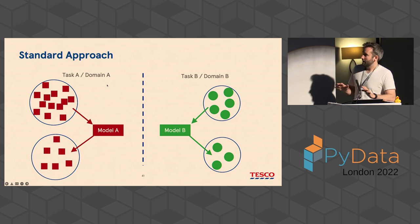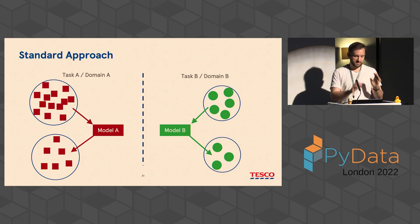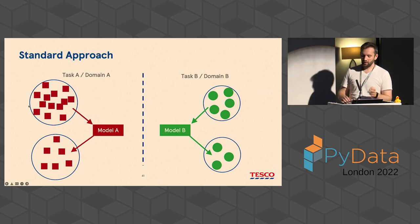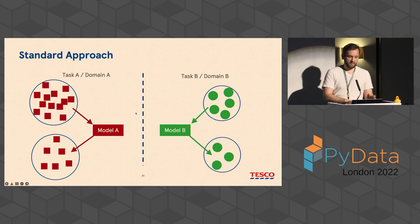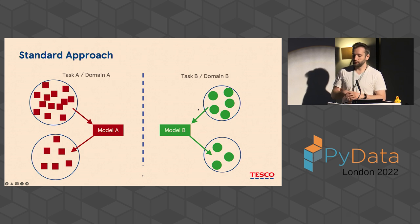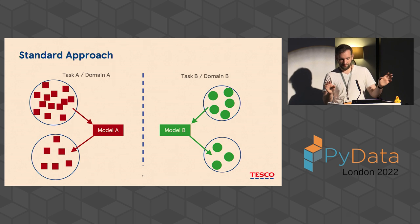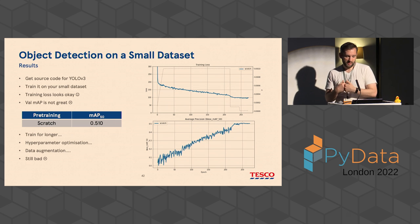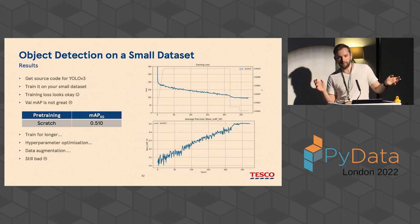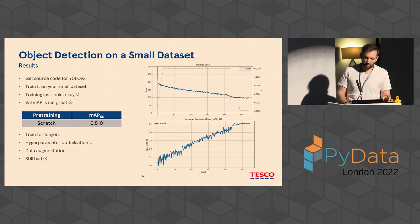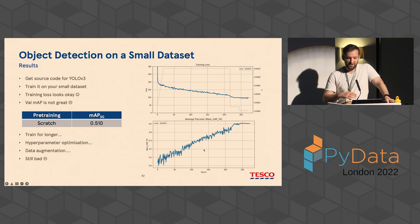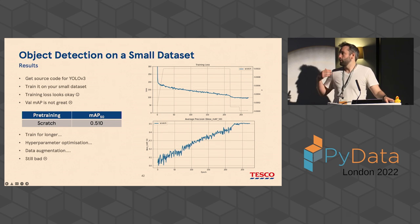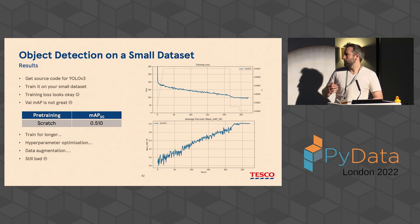If you want to train an object detector, the naive approach is to train a separate model for each task — download YOLO V3 source code with randomly initialized weights and train on your dataset. The training loss may look like it's converging, but the validation average precision looks questionable. You could train for longer, do hyperparameter optimization, or data augmentation, but you find it's still not working great.